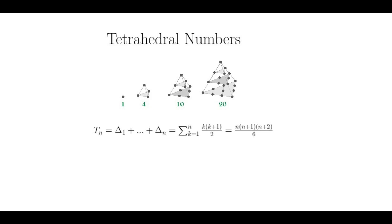I'm using the symbol delta for triangular because it looks like a triangle, and I am already using t for tetrahedron numbers. Therefore, the nth tetrahedron number, t sub n, is equal to the sum from 1 to n of k times k plus 1 over 2.